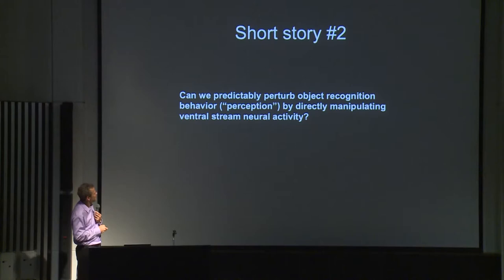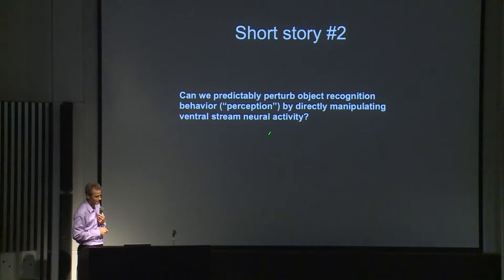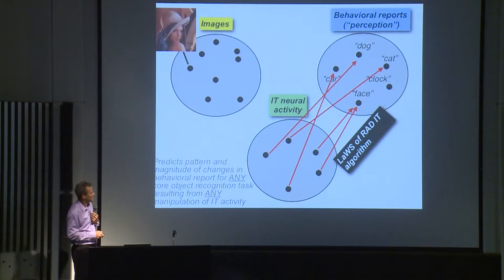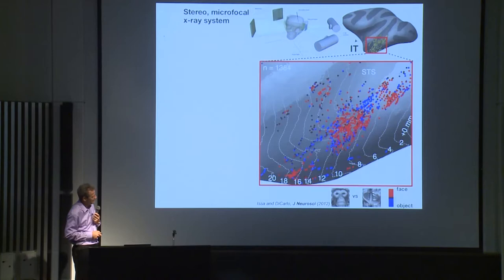It's also possible to estimate position, pose, and the aspect ratio of a bounding box from IT — these can be estimated as well as humans can on these images. So there's a general-purpose representation of objects in IT cortex. That was story one. Story two: if you really believe that algorithm, you should be able to perturb neural activity and predictably change the perceptual report of the animal. That's a stronger test — causal rather than just correlative evidence.